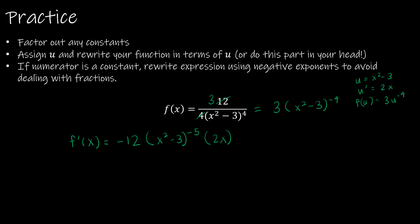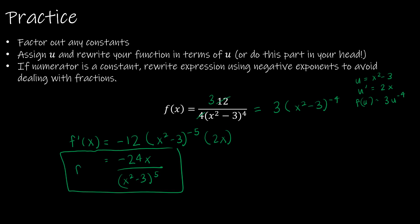Then I multiply by the derivative of u, which is 2x. Simplifying: negative 12 times 2 is negative 24x, and (x squared minus 3) to the positive 5 goes in the denominator. So my final answer is negative 24x over (x squared minus 3) to the fifth. It's not necessary to show u and u prime explicitly — once you're doing that in your head, it will save time.